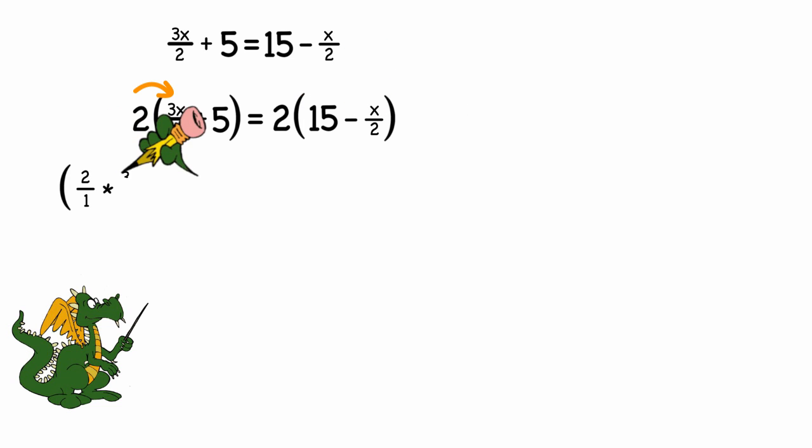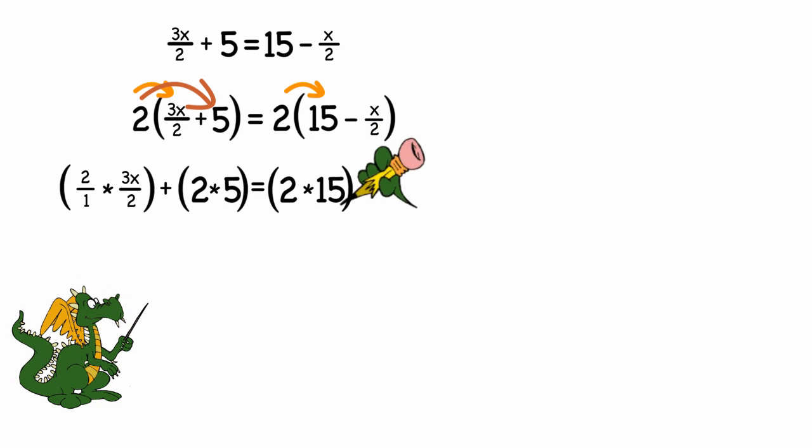Be careful that you distribute the 2 to each term in the equation. This is the place I've seen the most mistakes. Simplifying that, I get 3x plus 10 is equal to 30 minus x.